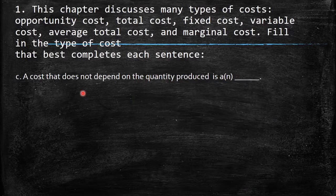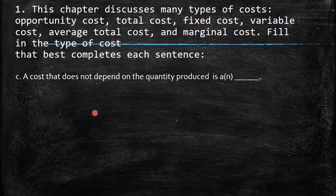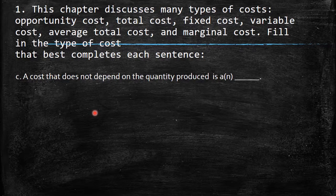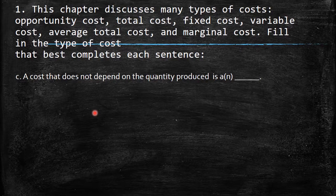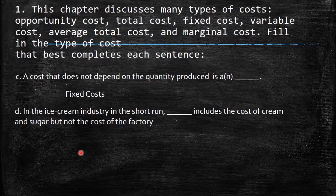The next sentence says: a cost that does not depend on the quantity produced is a — this is fixed cost. Fixed costs don't change at all even when production is very large. For example, rent: whether you produce one pizza or one car, you still pay rent every month.